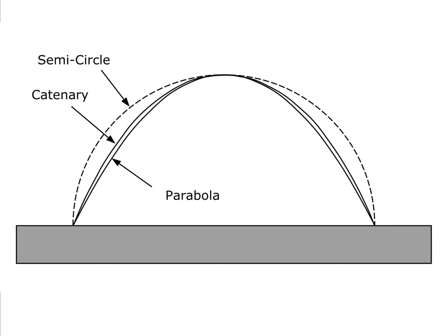Barrel vaults can be made in all the same shapes as narrow arches. Here are some examples: a parabolic shape, a catenary, and a semicircle.